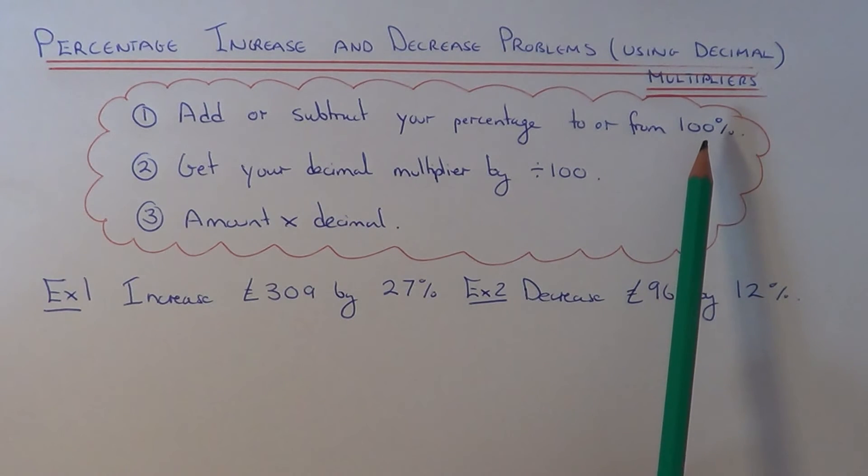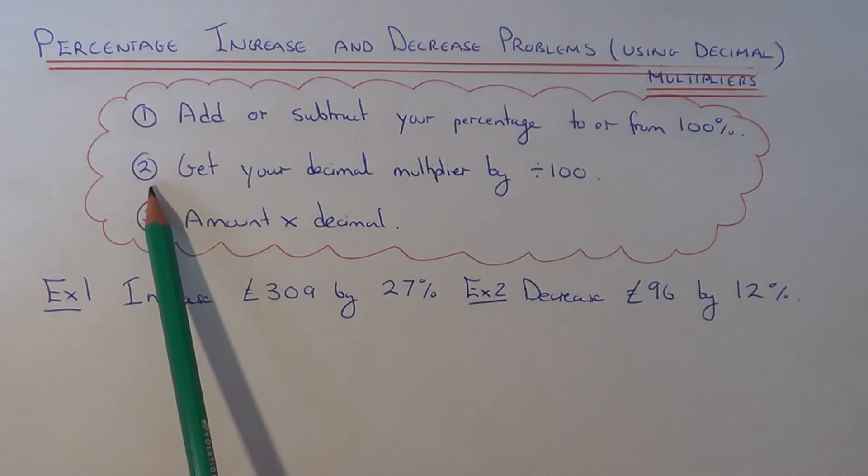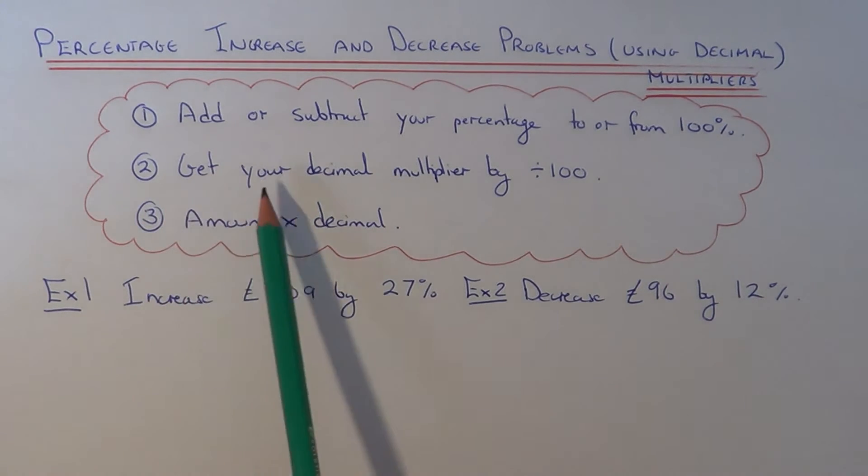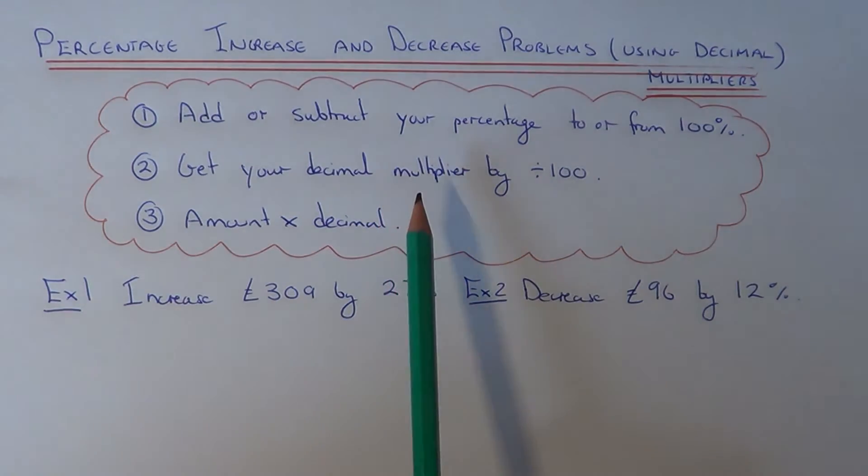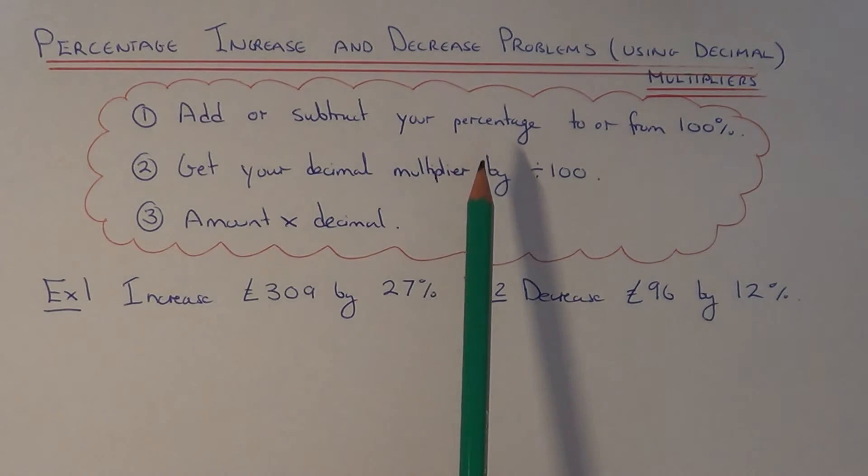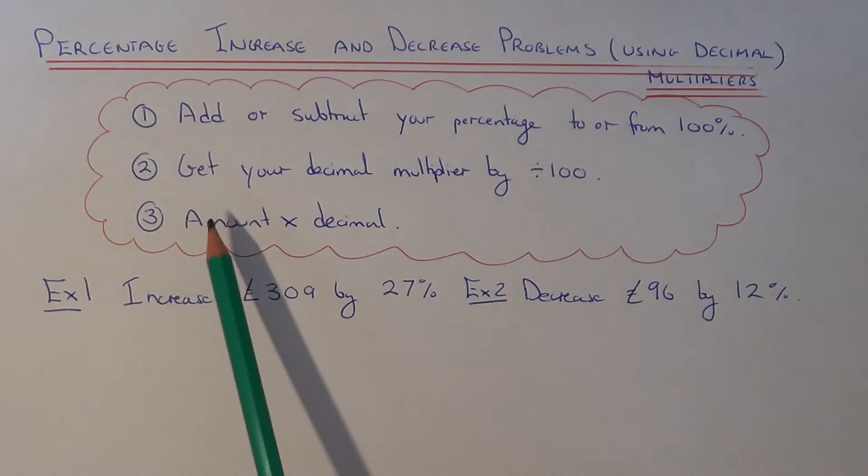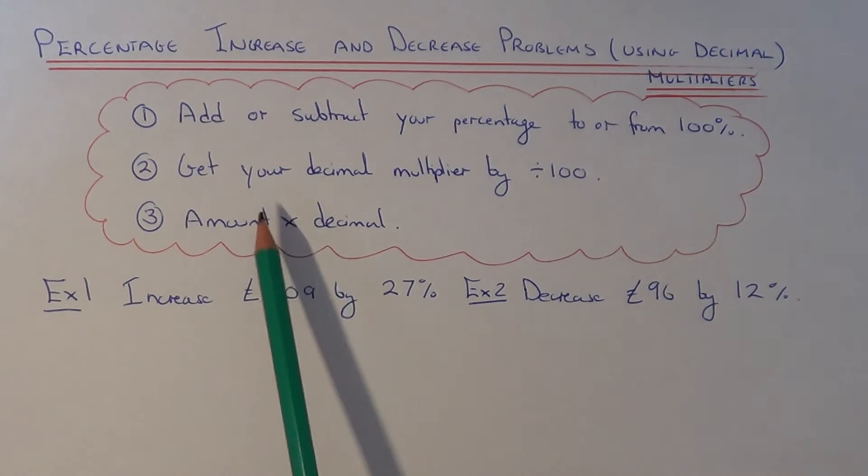If you're doing a percentage decrease, you take away the percentage from 100. The second step is you need to divide the percentage by 100. This will give you the decimal multiplier. And then the third and final step is to multiply the amount by this decimal multiplier.